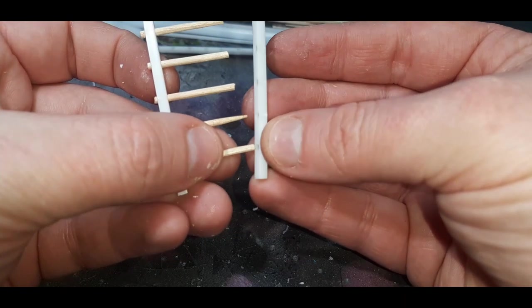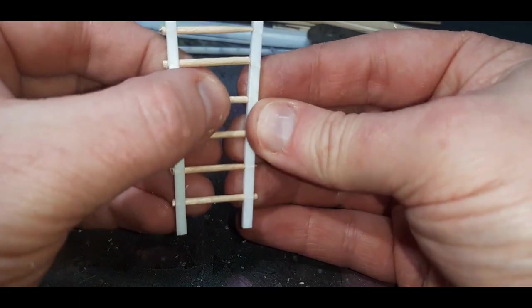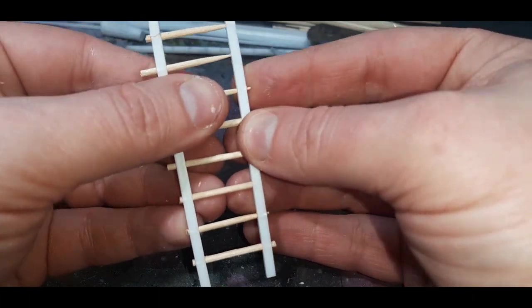This next step here is the hardest part of building these ladders, trying to get this other side onto the rungs. You're gonna need some patience and time to do this but you can just wiggle this on, slowly work your way up the ladder until you've got all the rungs in position.